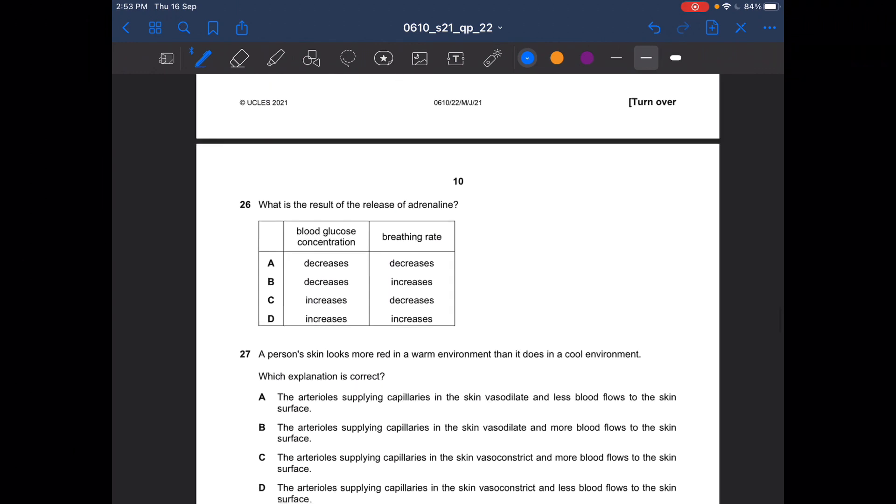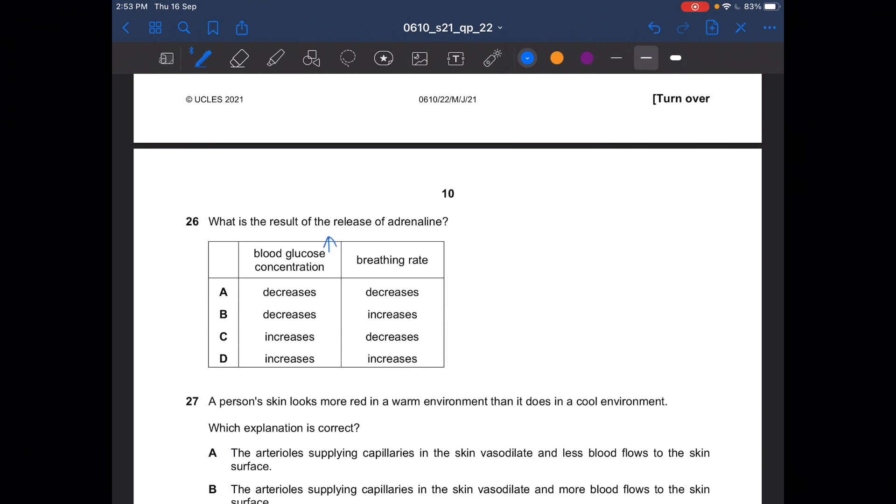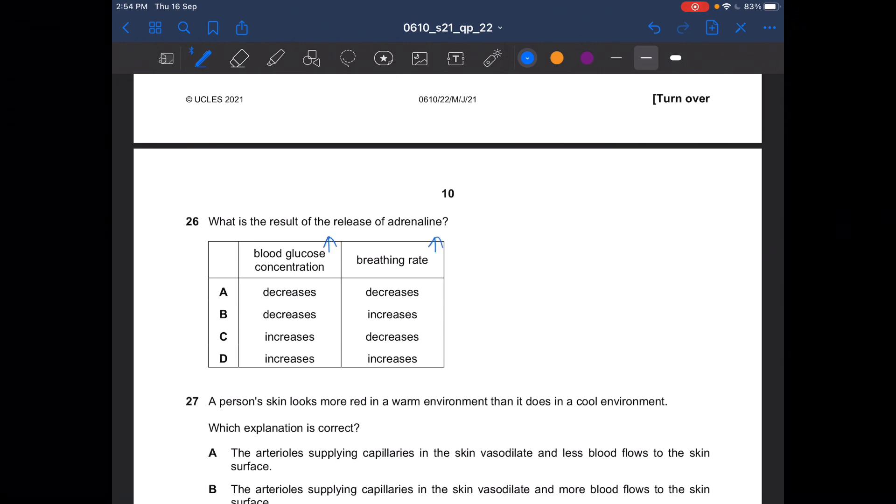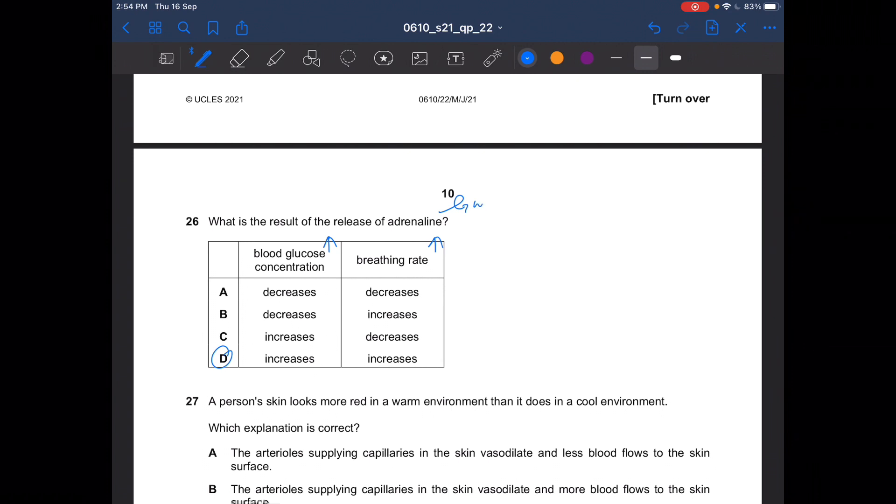Next question. What is the result of the release of adrenaline? Adrenaline would increase your blood glucose concentration and also your breathing rate. So it should be D. Adrenaline also widens your pupils, increases pulse and increases pulse rate.